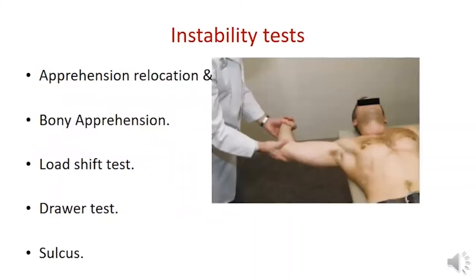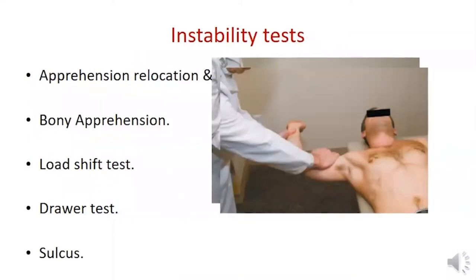The apprehension test is performed with the patient supine; the examiner abducts the arm to 90 degrees and slowly externally rotates to 90 degrees. It is positive if the patient feels apprehension. From this position, the relocation test is performed by applying a posterior force to the humeral head — positive if apprehension decreases. The surprise test involves sudden removal of that posterior force; positive when apprehension returns.